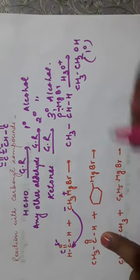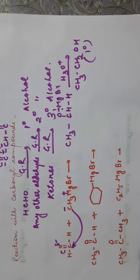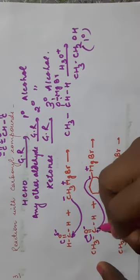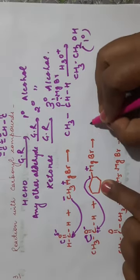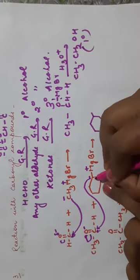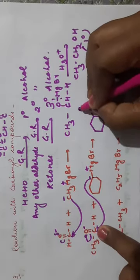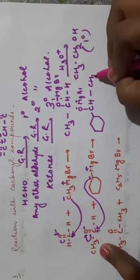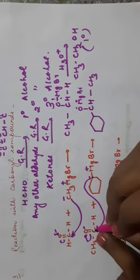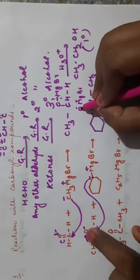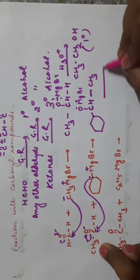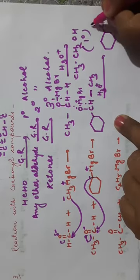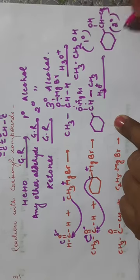Acetaldehyde on reaction with cyclohexyl magnesium bromide: the carbanion attacks the carbonyl carbon of acetaldehyde, forming an alkoxide intermediate with cyclohexyl, H, CH₃, and O⁻MgBr on the central carbon. On hydrolysis, this gives a secondary alcohol (cyclohexyl–CHOH–CH₃). This confirms that any aldehyde other than formaldehyde gives a 2° alcohol.